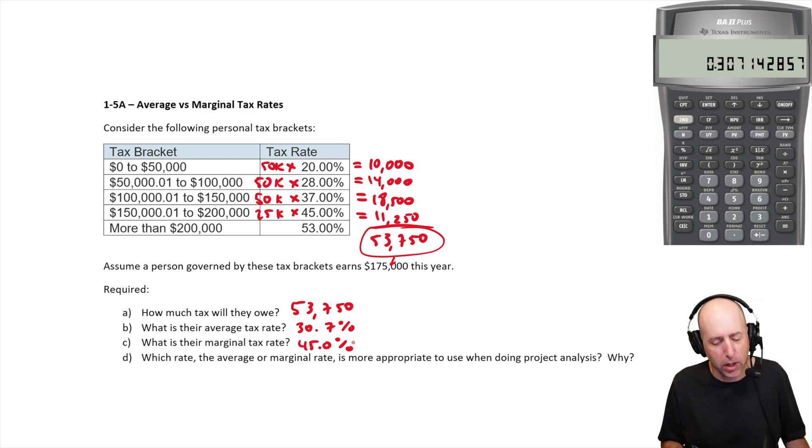Which rate, the average or the marginal, should we use when doing project analysis in corporate finance? The answer here is marginal. I'll just blurt out the answer.